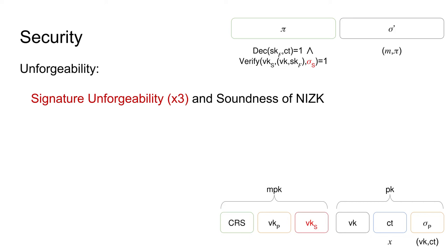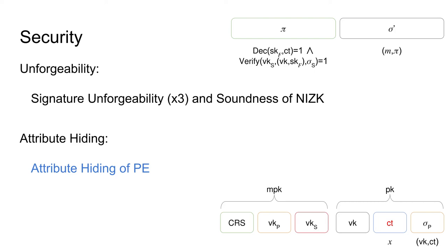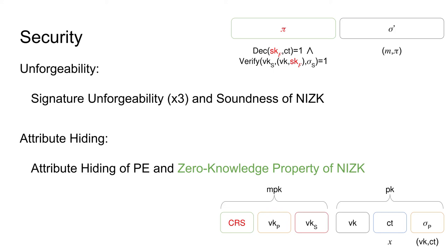This concludes the analysis of unforgeability. We now look at attribute hiding of our scheme. To achieve attribute hiding, we need to ensure that nothing about the attributes of the participating parties is leaked from the public keys, and that generated signatures only reveal that the attributes fulfill the policy and nothing beyond that. Since the only part of the public key containing attribute information is the ciphertext CT, it follows from the attribute hiding of the predicate encryption scheme that nothing about the attributes is leaked by the public keys. To ensure no information beyond the policy evaluation is leaked by a signature SigmaPrime, we rely on the zero-knowledge property of our proof system, which guarantees that no information beyond the validity of the statement — in our case, the fulfillment of the policy — is leaked.